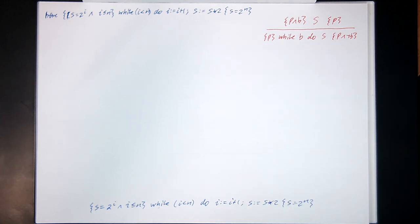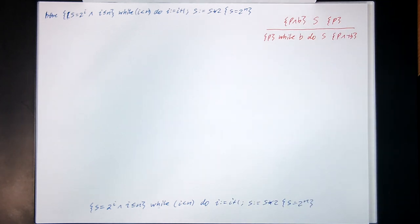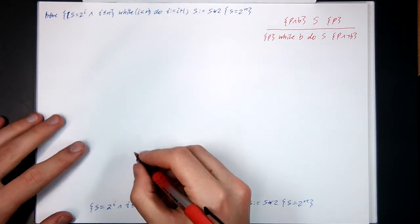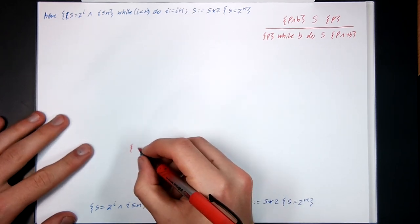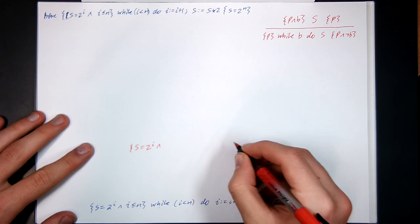Okay, so now let's try a similar problem. Here, the choice of P for the invariant is not so obvious. If we just try the same as before, what was our choice of invariant before? It was just S equals 2 to the I and B is I less than N.